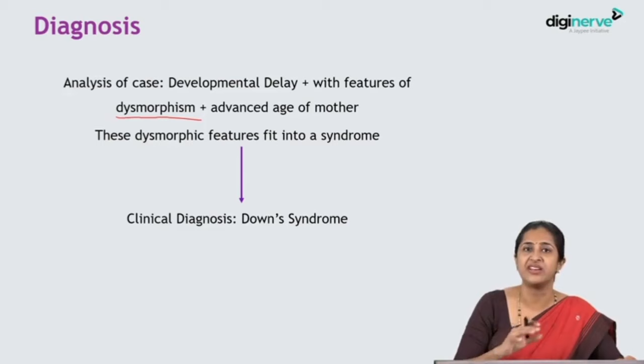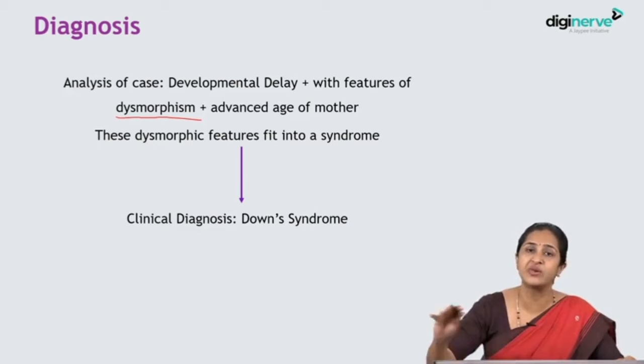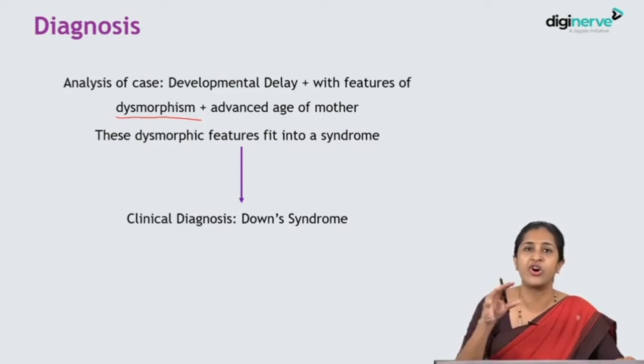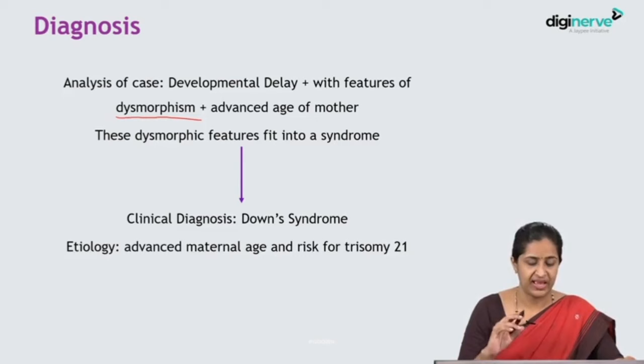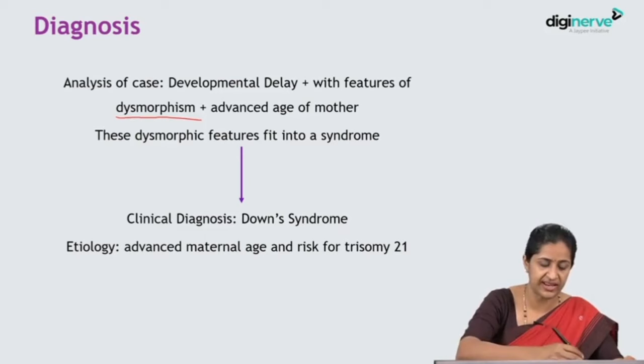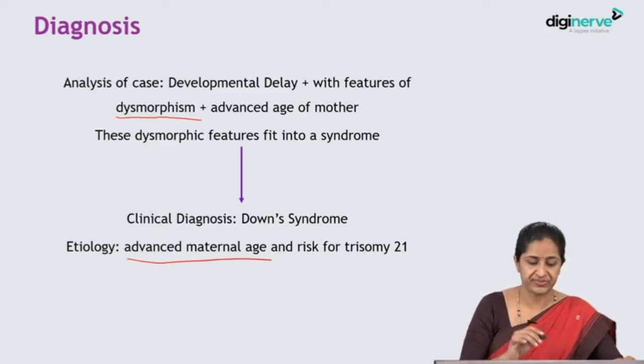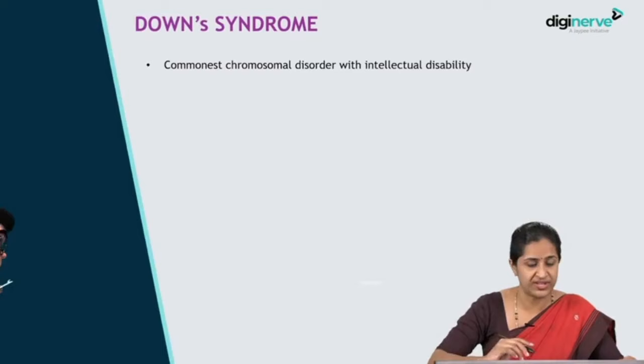In Down syndrome, whatever dysmorphic features I have highlighted, the child looks exactly like that. Most children with Down syndrome, irrespective of their parents' age, essentially look like siblings — they all look very alike. That is the hallmark of Down syndrome. The etiology for this child developing Down syndrome was the fact that his mother's age was advanced — 40 years at the time of delivery — and the risk of trisomy 21 is very high with advanced maternal age.